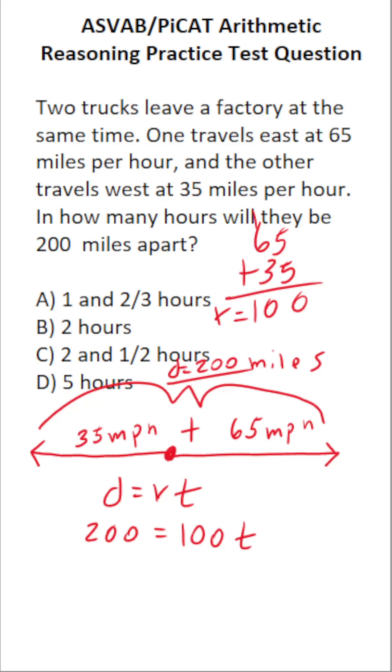And to solve for T, all we have to do is divide both sides by 100. In doing so, this crosses out, leaving us with T over here. 200 divided by 100 is 2. In other words, it's going to take two hours to be 200 miles apart.